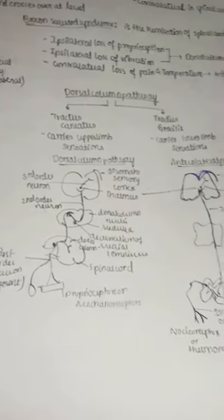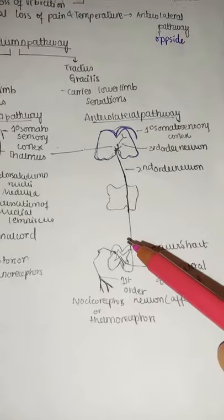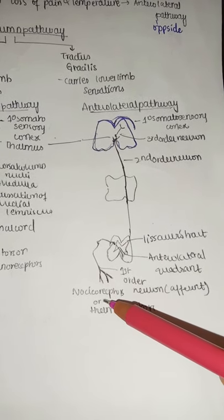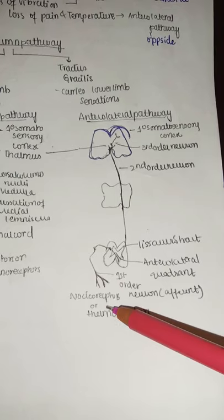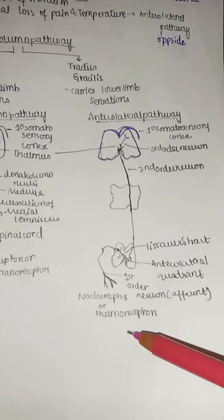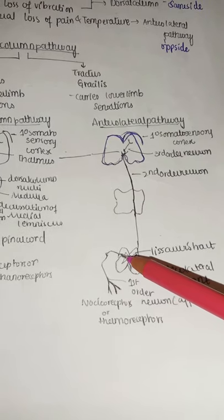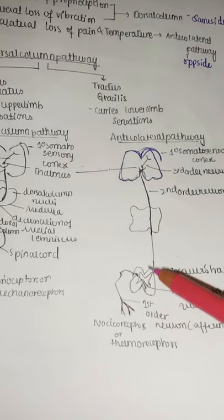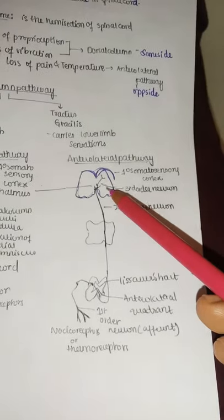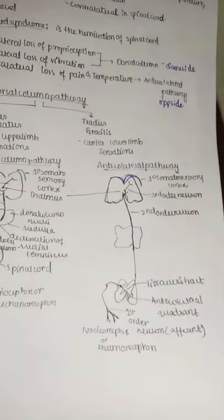In the anterolateral pathway, nociceptors and thermoreceptors send signals via first-order neurons that cross to the contralateral side in the spinal cord. Second-order neurons ascend to the thalamus, and third-order neurons project to the primary somatosensory cortex.